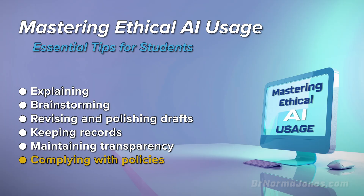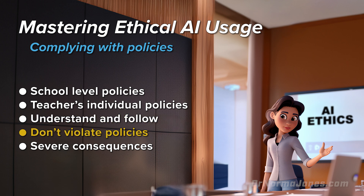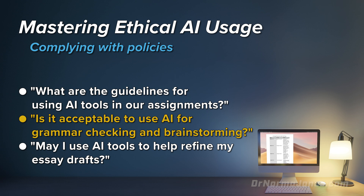Let's next consider how we must comply with policies at multiple levels. Always comply with your institution's policies on AI usage. Different schools and teachers may have different guidelines. For instance, some might allow the use of AI for brainstorming and editing, but not for generating entire assignments. Make sure you review, understand, and then closely follow these guidelines to avoid any potential issues, such as violating academic integrity policies. The consequences can be severe. When in doubt, ask your teachers for clarity. Some questions you could consider are: 'What are the guidelines for using AI tools in our assignments?' 'Is it acceptable to use AI for grammar checking and brainstorming?' 'May I use AI tools to help refine my essay drafts?' By adhering to policies and gaining clarity, you can help ensure that your use of AI is ethical and aligns with academic standards.